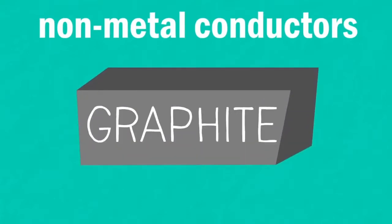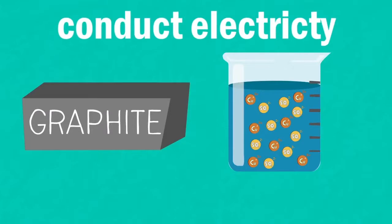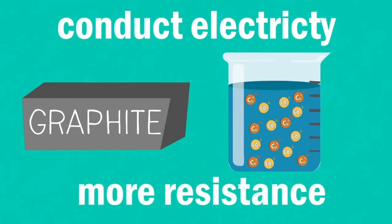Some non-metal conductors like graphite, a form of pure carbon, or solutions of salts forming electrically charged ions will conduct electricity, but these have more resistance.